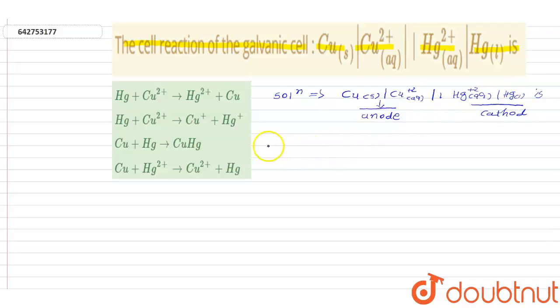So here in anode, oxidation takes place. Cu is Cu plus 2 equals 2E minus.